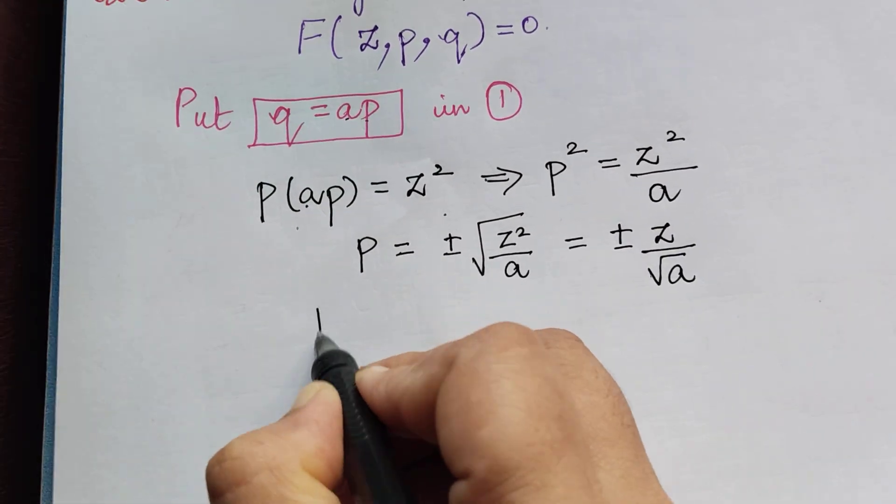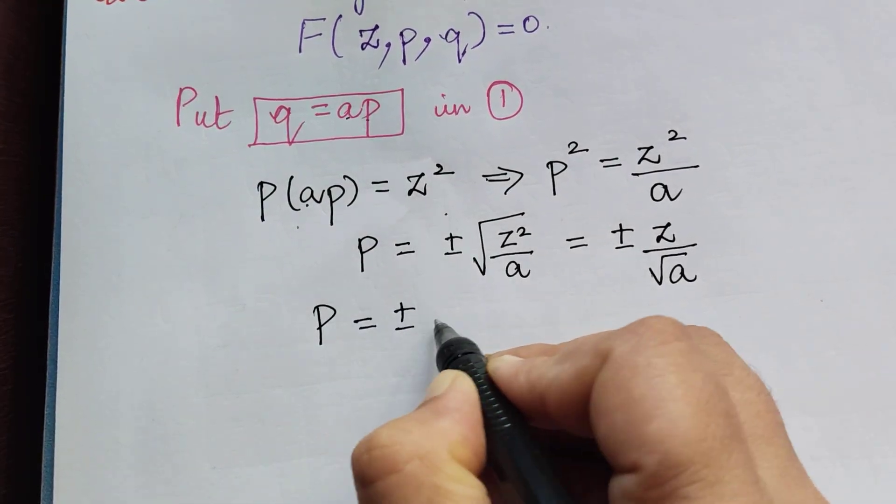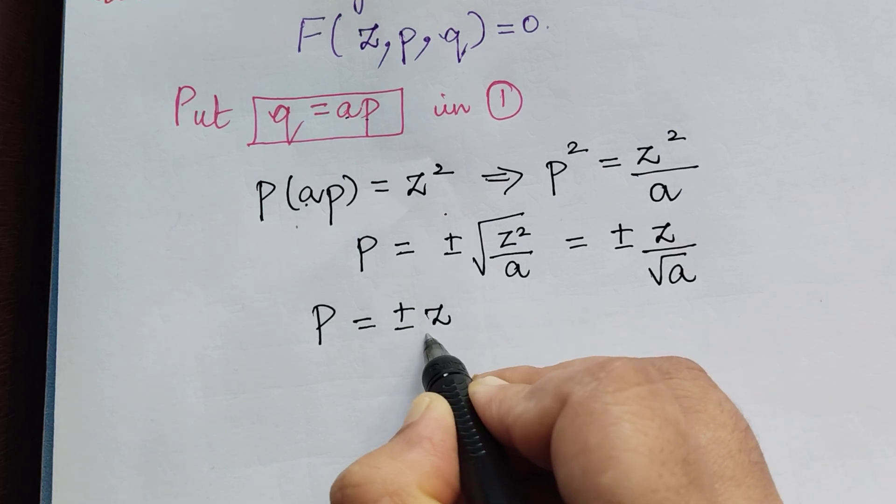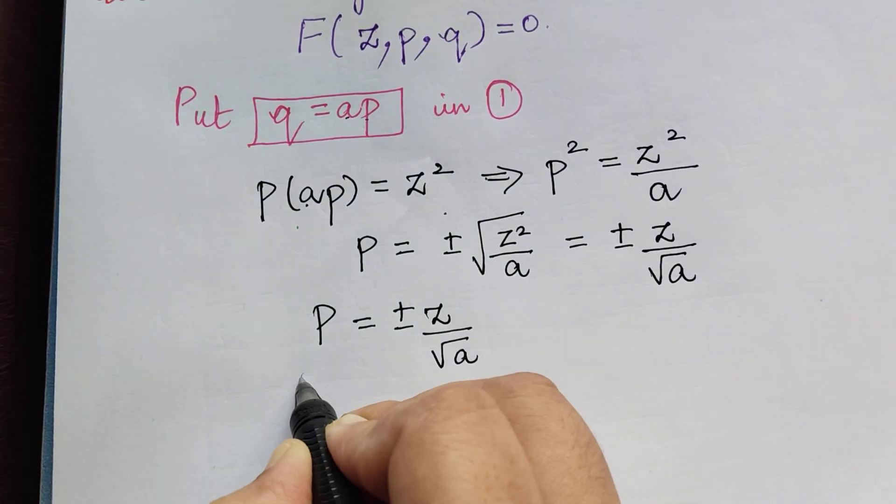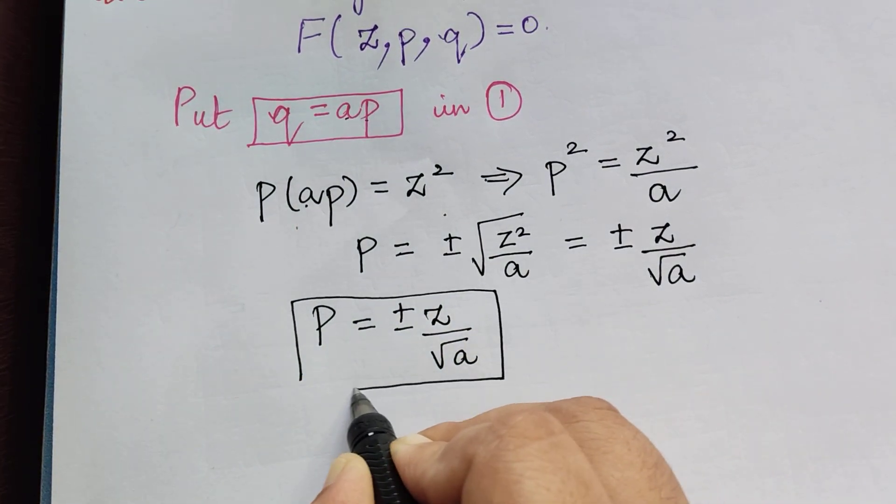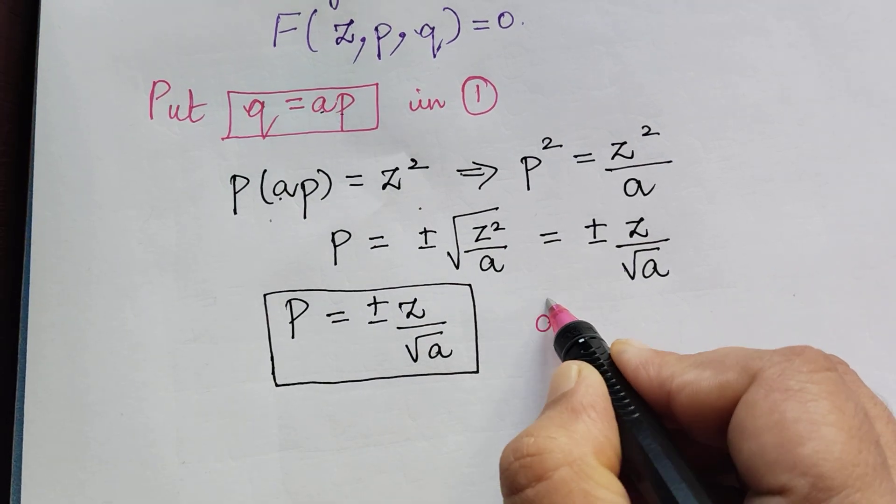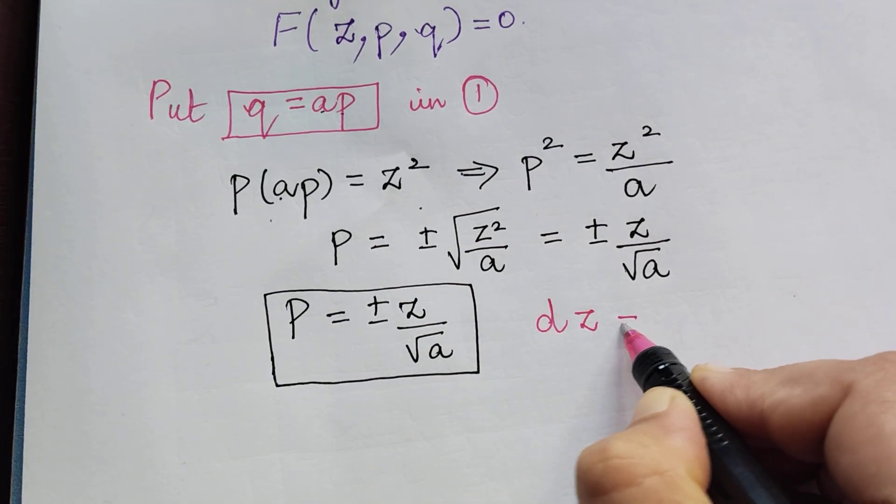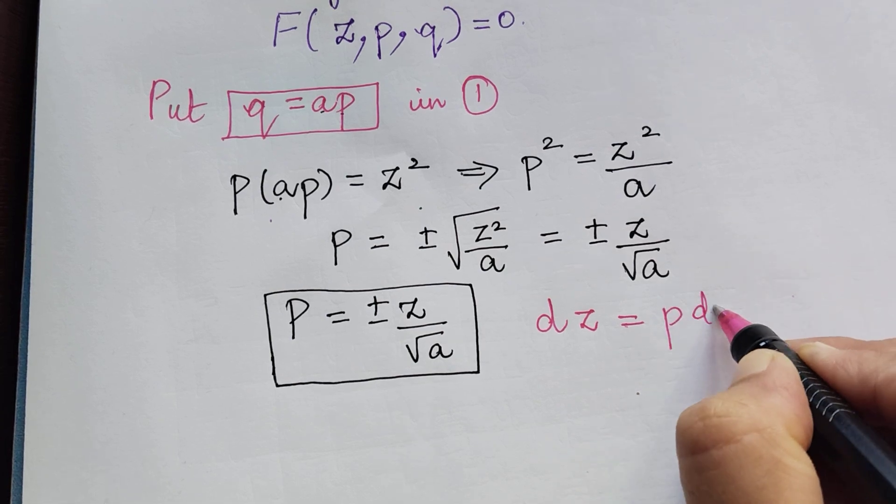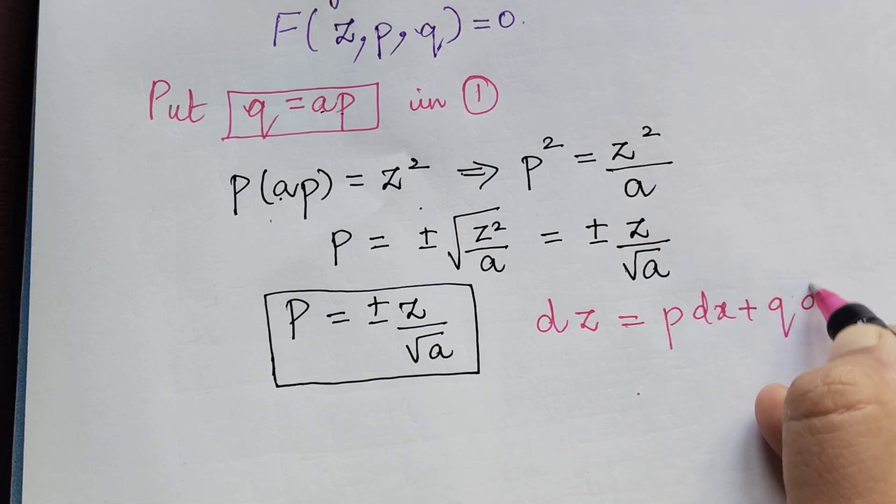Therefore we have obtained P = ± Z/√A. The next step is to make a substitution of P and Q in dZ = P dx + Q dy.